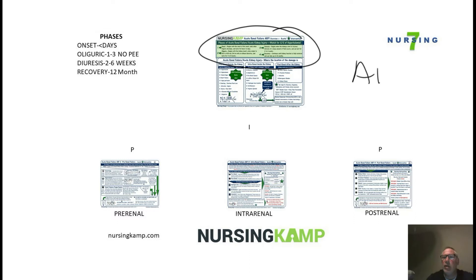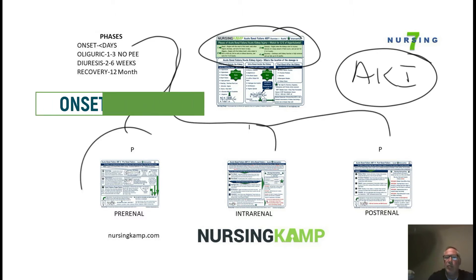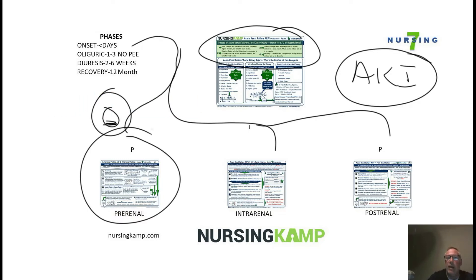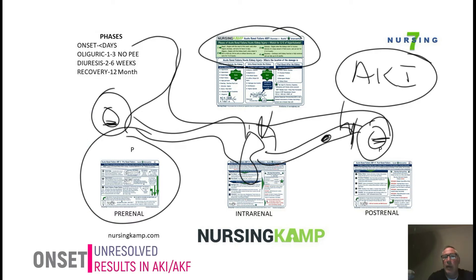Acute kidney injury generally goes through several phases — four of them. The onset is the first phase and could be caused by a pre-renal condition (before the kidney), intra-renal (inside the kidney, such as from medications), or post-renal (after the kidney — like a clot, a kink, or BPH). This onset can last up to a few days.